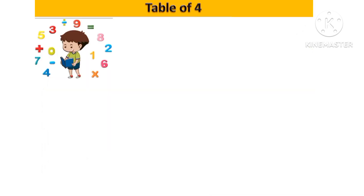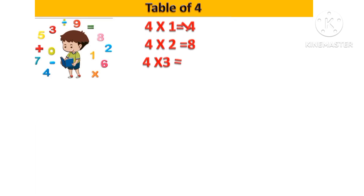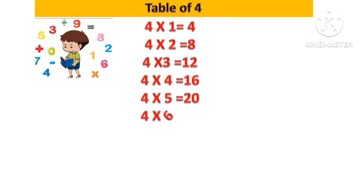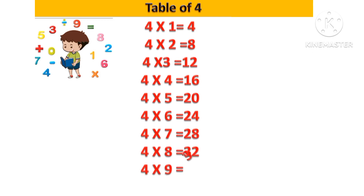Let's revise table of 4. 4 1s are 4, 4 2s are 8, 4 3s are 12, 4 4s are 16, 4 5s are 20, 4 6s are 24, 4 7s are 28, 4 8s are 32, 4 9s are 36, 4 10s are 40.